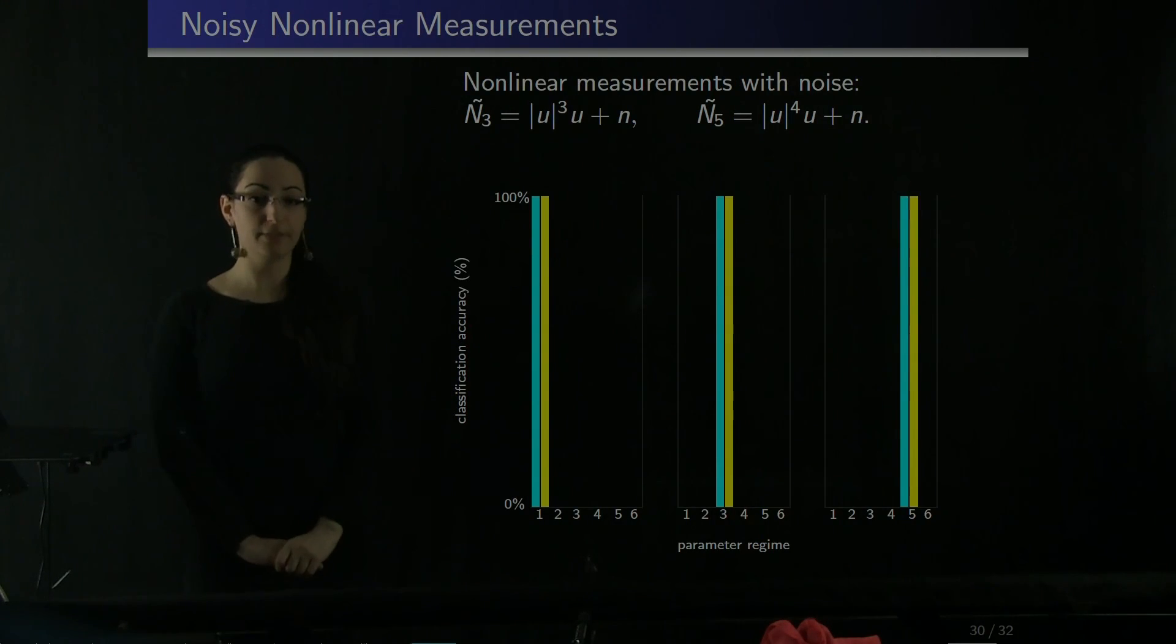Sometimes it's not possible to measure the solution. Instead, we measure nonlinearity. So nonlinearity has noise in the measurement. Then if we use cubic and quintic nonlinear library mode for classification, we did pretty much 100% accurate classification.